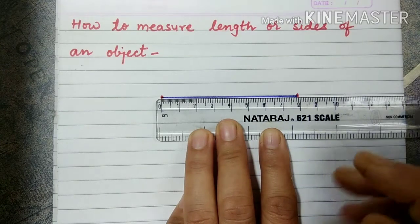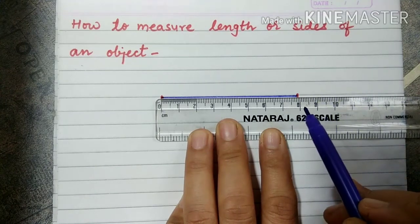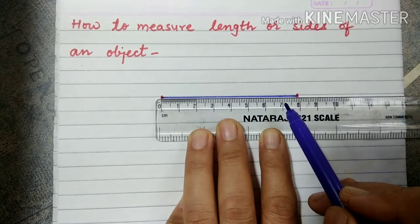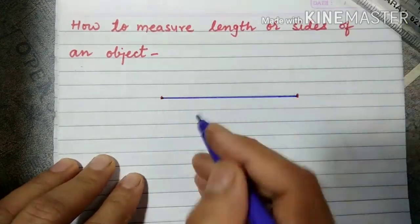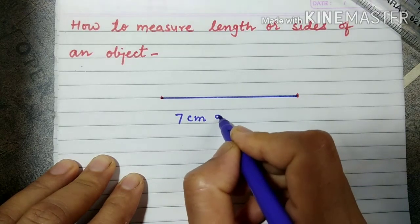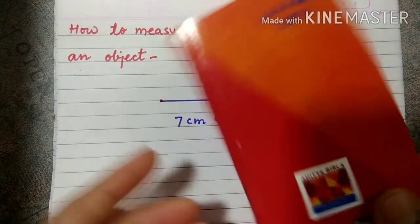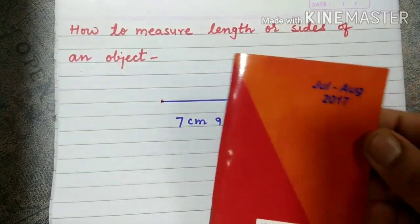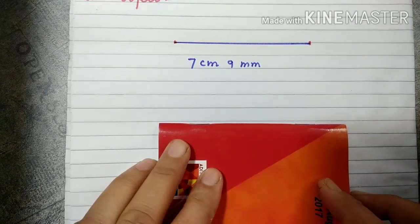Three, four, five, six, seven, and eight. It is not exactly eight — it is between seven and eight. So we'll count the millimeter parts after seven. It is nine small parts after seven, so the length of this side is seven centimeters and nine millimeters.